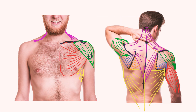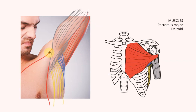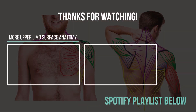And so that's it — the muscles of the chest, shoulder and back. If you've had a go at drawing along, please let me know, I would love to see how you've got on. In the next two videos we'll be looking at the axilla and armpit, and then the muscles in the arm and the forearm. Thank you for watching, and I'll hopefully see you again soon. Cheers!